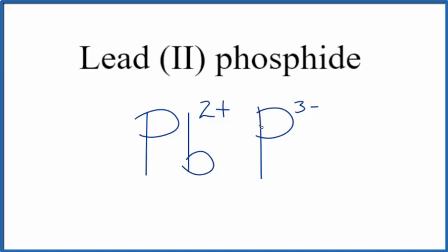To do that, we'll use something called the crisscross method. We can move the three here, the two here. We get rid of these symbols here, so that gives us the formula Pb₃P₂ for lead (II) phosphide.